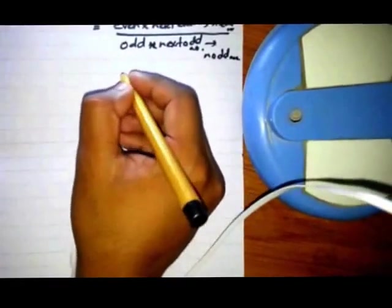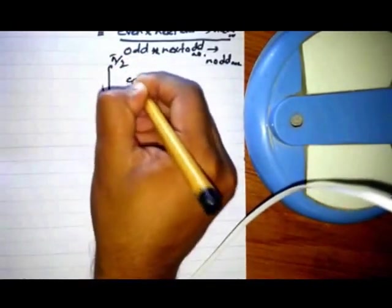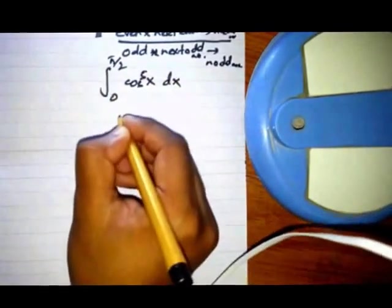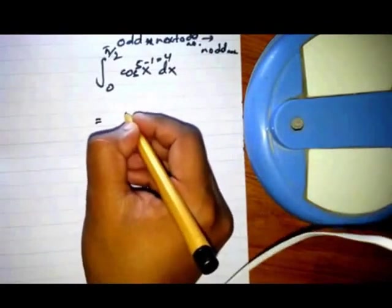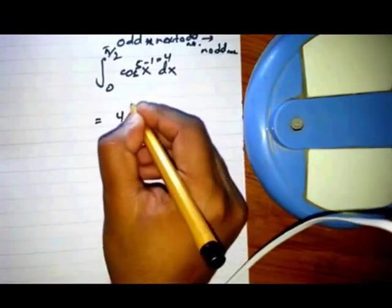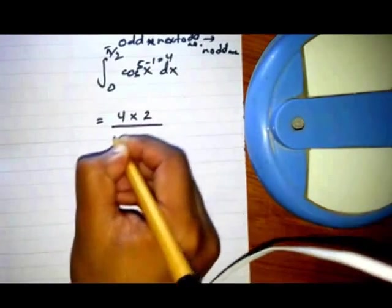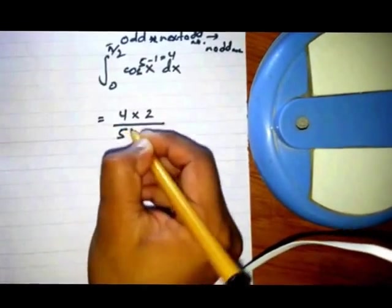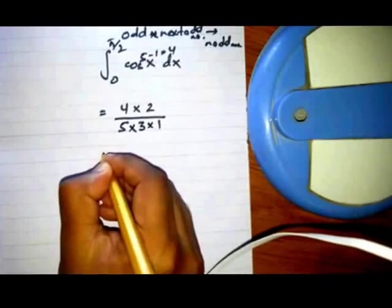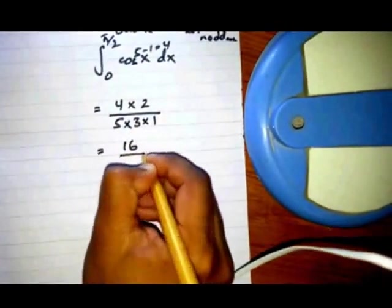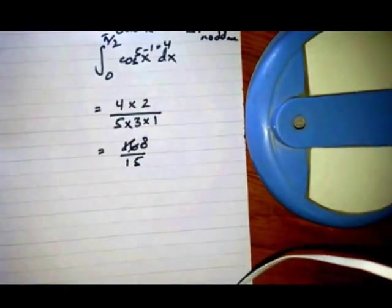This is the general formula. Now let us take an example: the integral of cos⁵(x) from 0 to pi by 2. According to the formula, subtract 1 from 5 to get the even power 4. In the numerator: 4 times 2. In the denominator: 5 times 3 times 1. The answer comes out to 8 by 15.